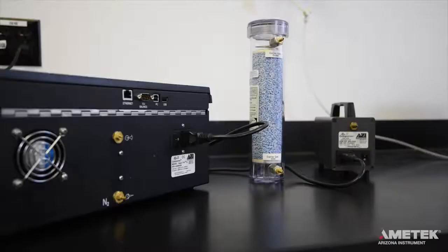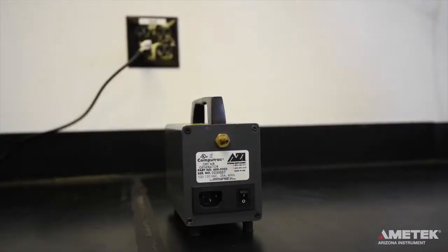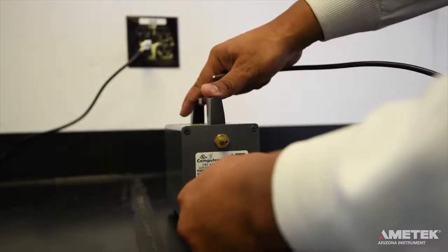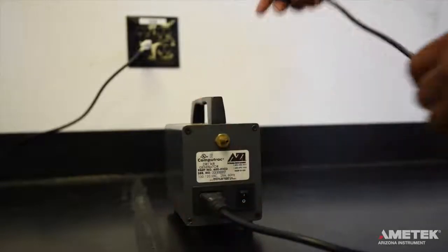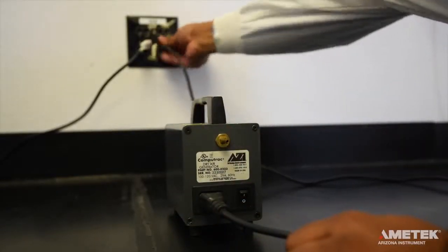If you are not using one of the previously mentioned options, the third option is to use the Ametek Arizona Instrument Dry Air Generator, or DAG for short. For this option, connect the dry air generator to its power cord and plug it in, making sure that the power switch is in the off position.